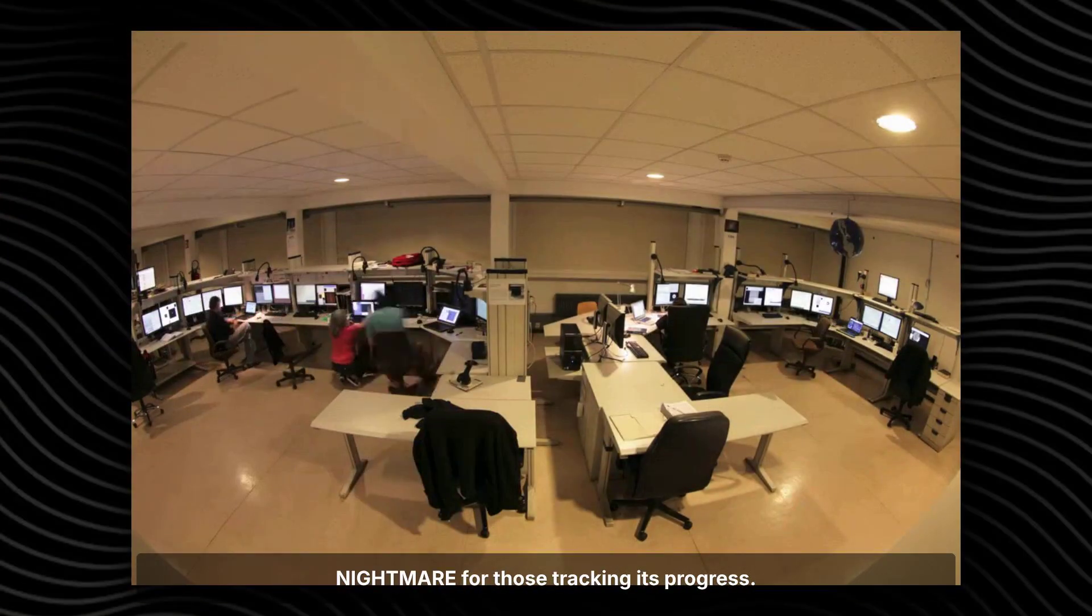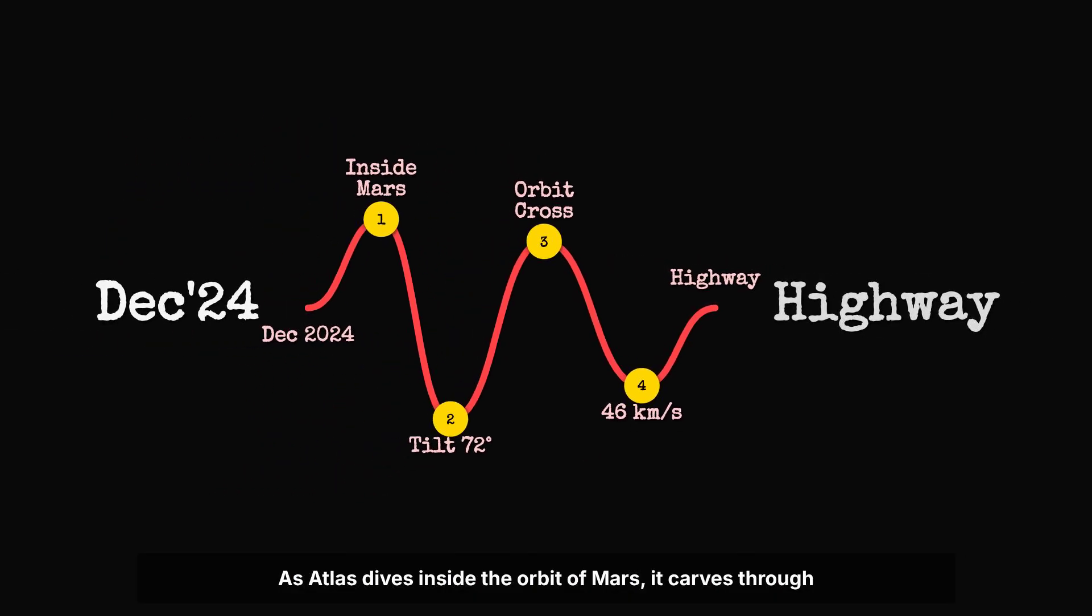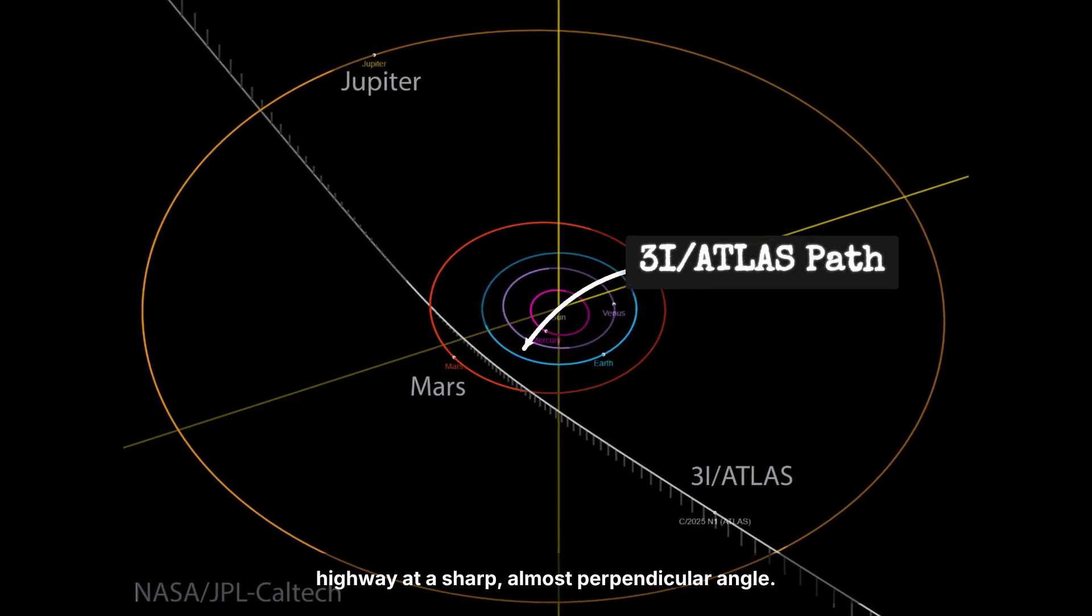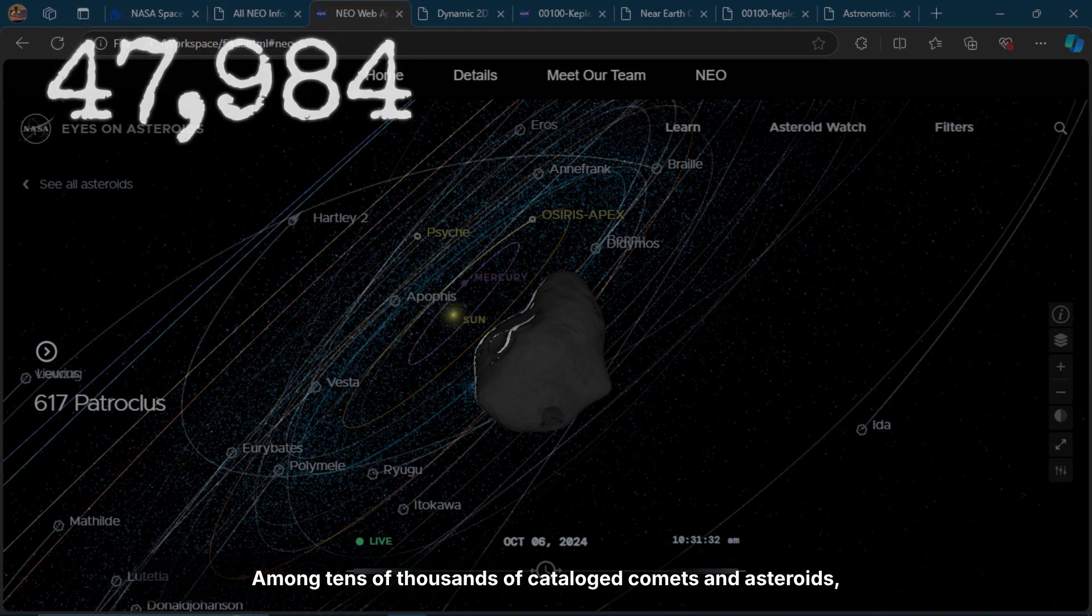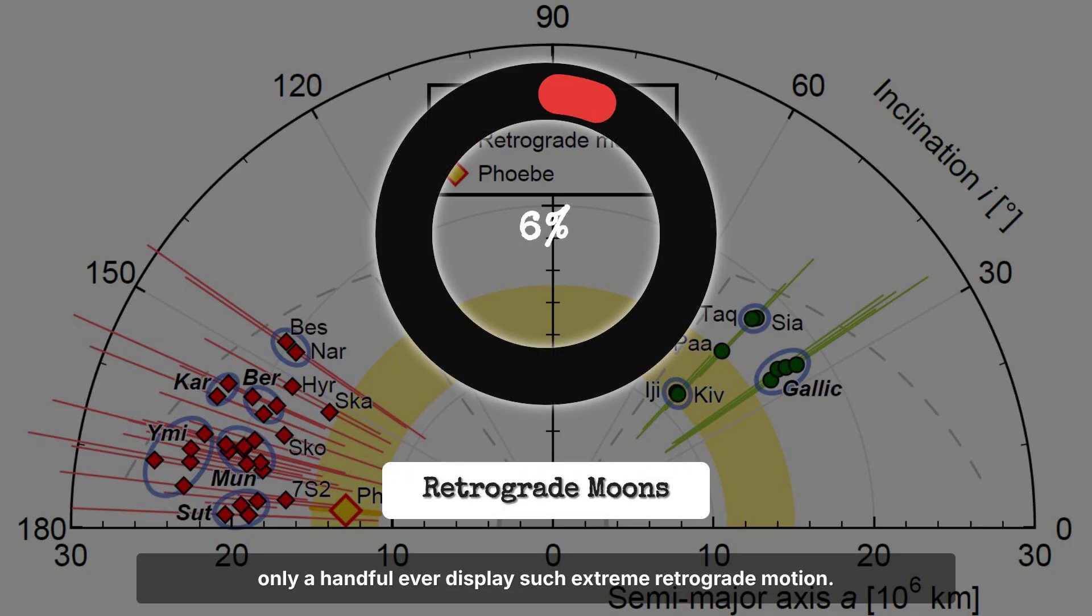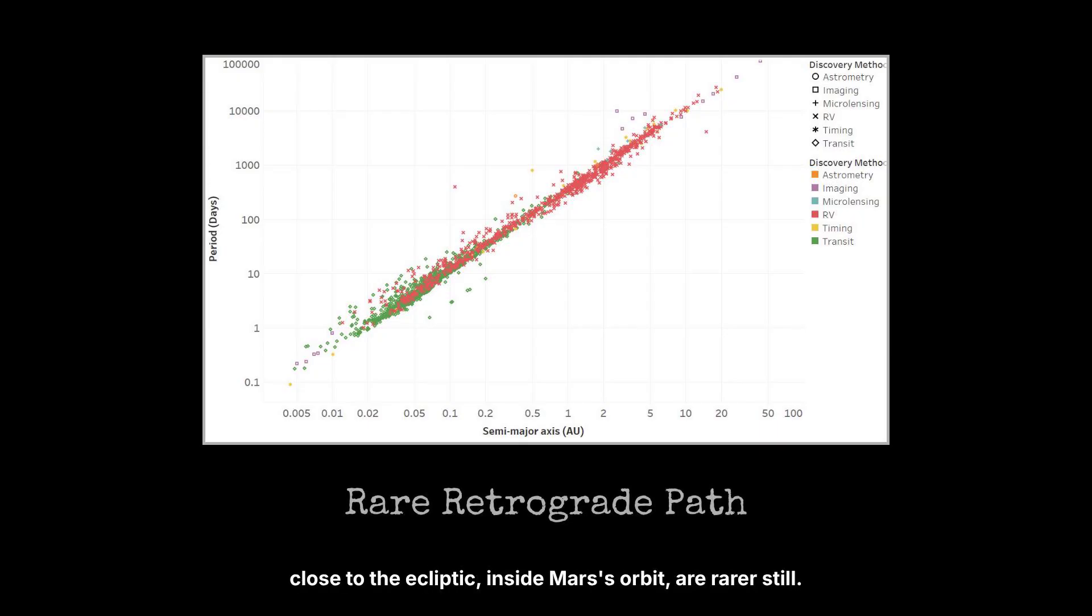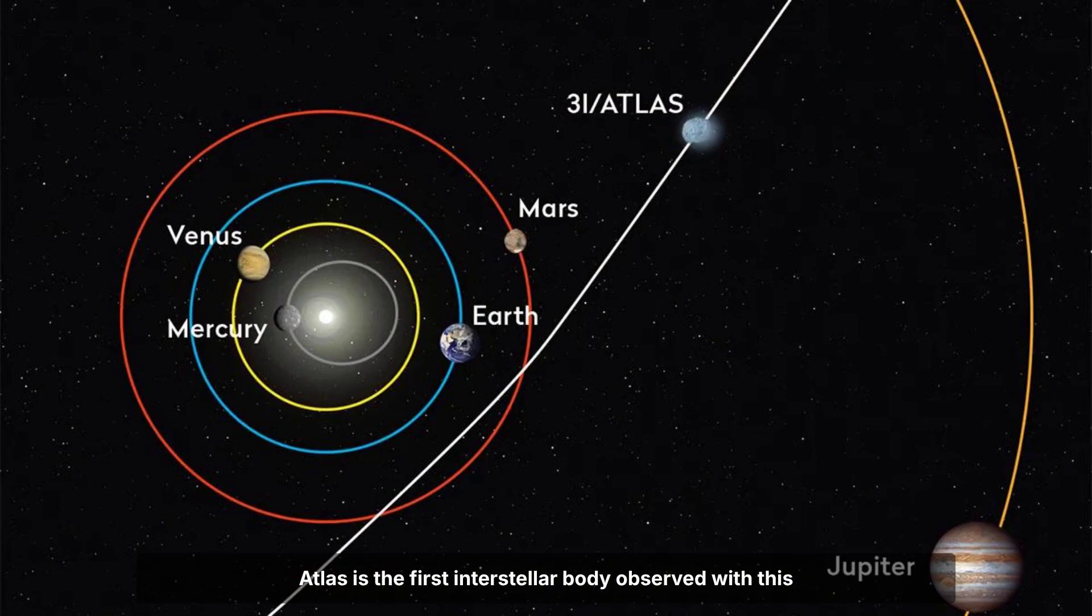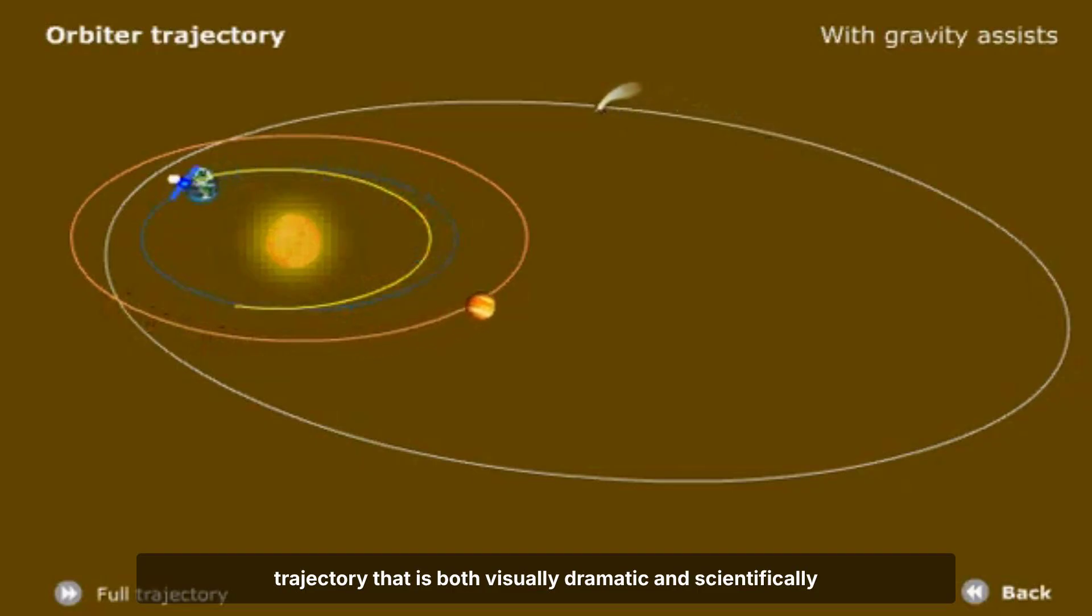As Atlas dives inside the orbit of Mars, it carves through the heart of the inner solar system, crossing the planetary highway at a sharp, almost perpendicular angle. Among tens of thousands of catalogued comets and asteroids, only a handful ever display such extreme retrograde motion. Retrograde objects are outliers. Ones that also slice so close to the ecliptic, inside Mars' orbit, are rarer still. Atlas is the first interstellar body observed with this combination of steep tilt and low offset.